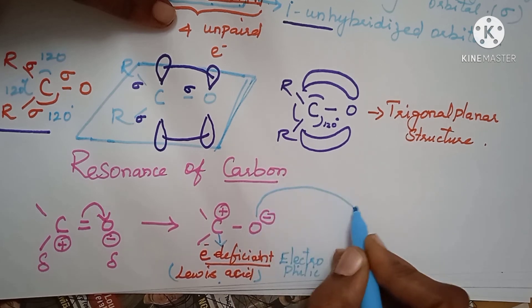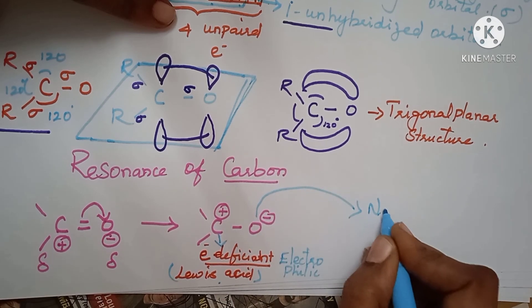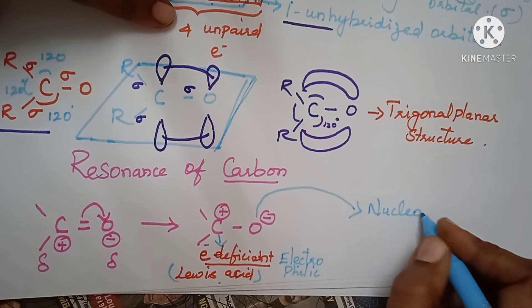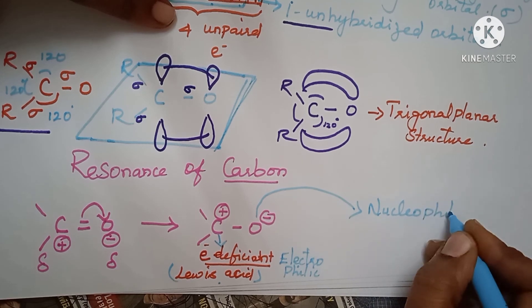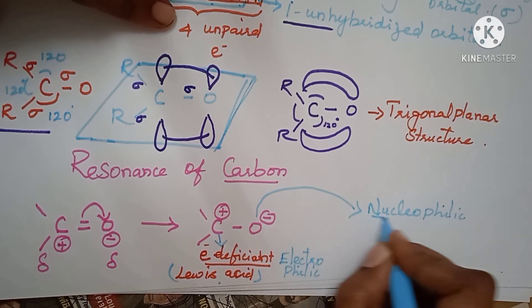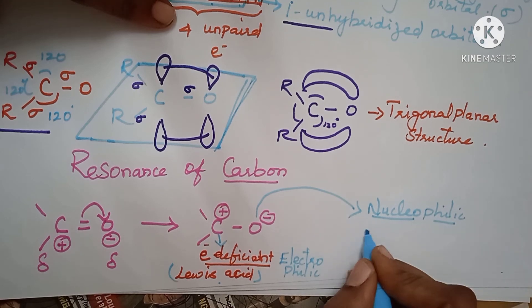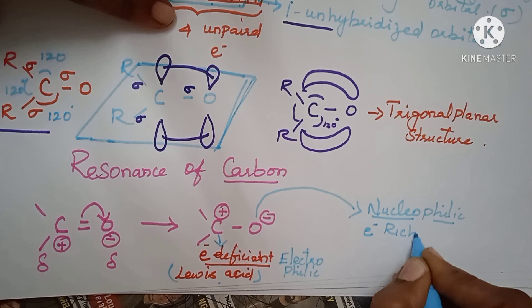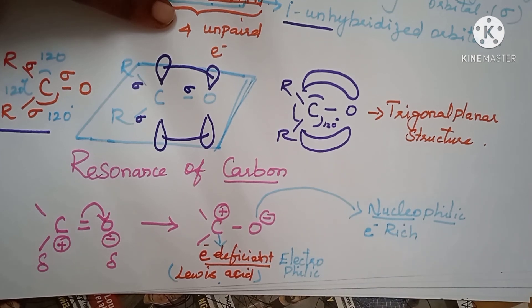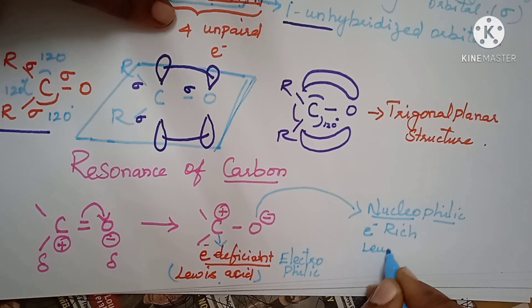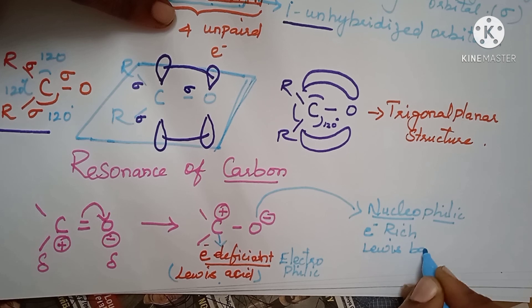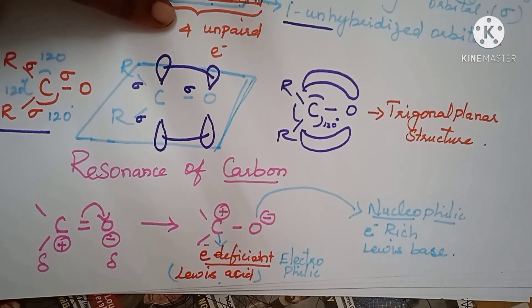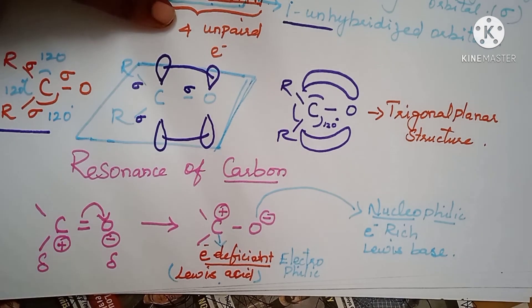Nucleophilic. Nucleophilic means, what it is? Electron rich. Electron rich means it is having more electrons. It is ready to give it to other. That means electron, it is a Lewis base. It acts as a Lewis base.